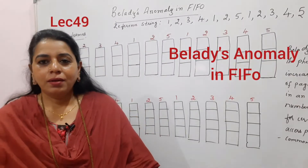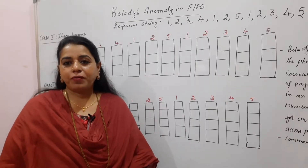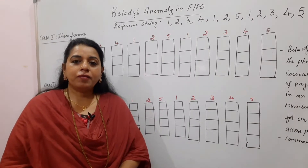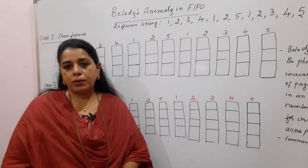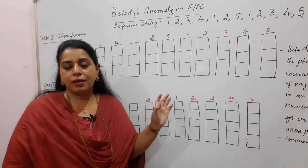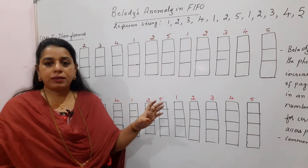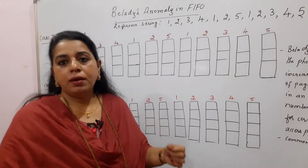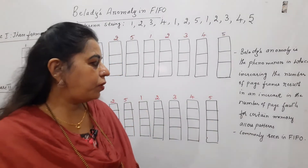Hello viewers, welcome back to my channel. This session is in continuation with the previous session wherein I explained the FIFO (First In First Out) page replacement algorithm. The last point I mentioned was that it suffers from Belady's Anomaly. What exactly this is, you will be seeing here in this session. Belady's Anomaly is a phenomenon in which increasing the number of page frames results in an increase in the number of page faults.